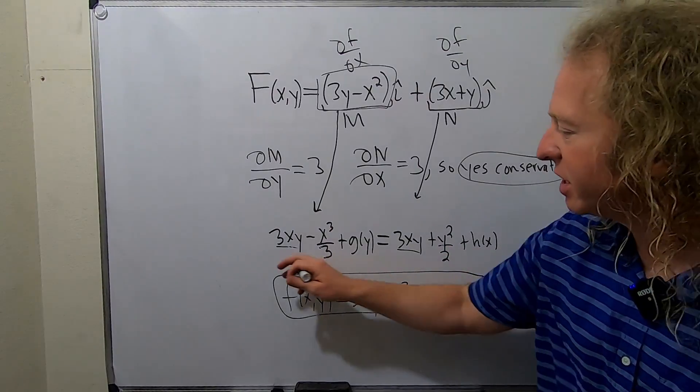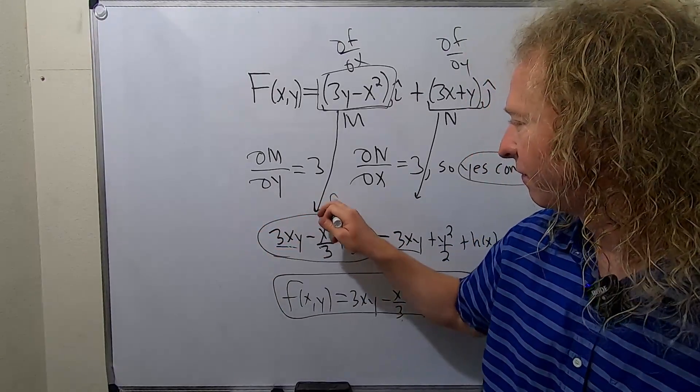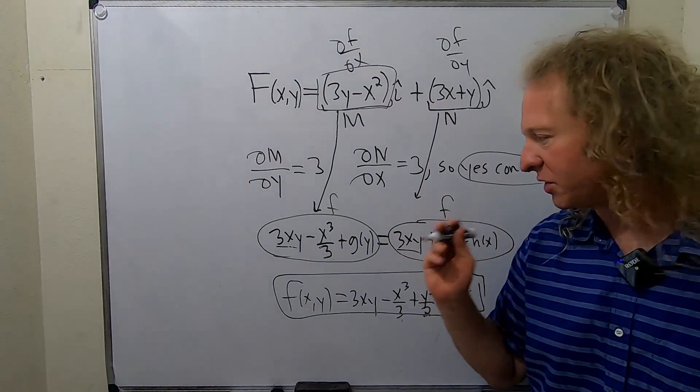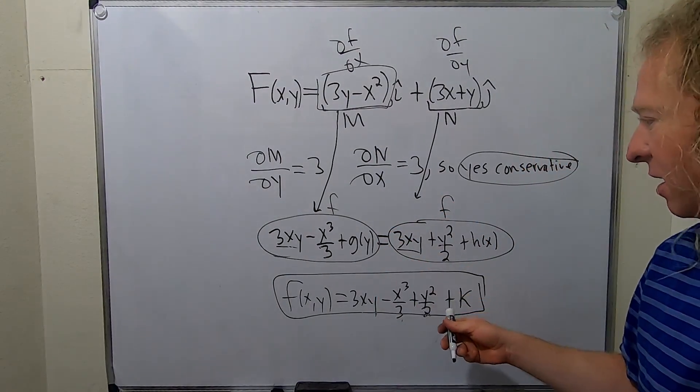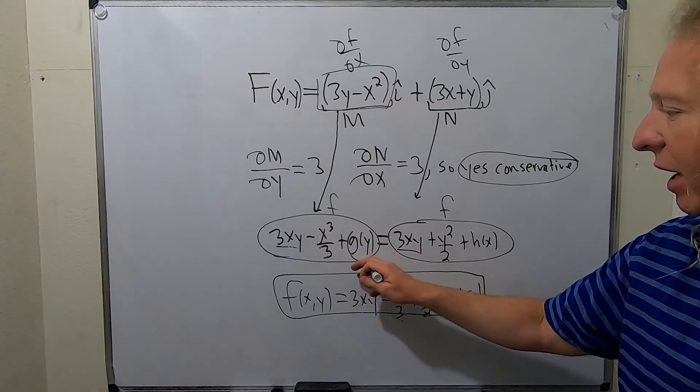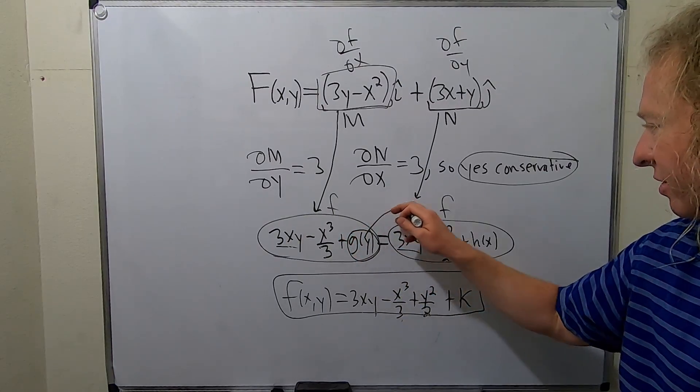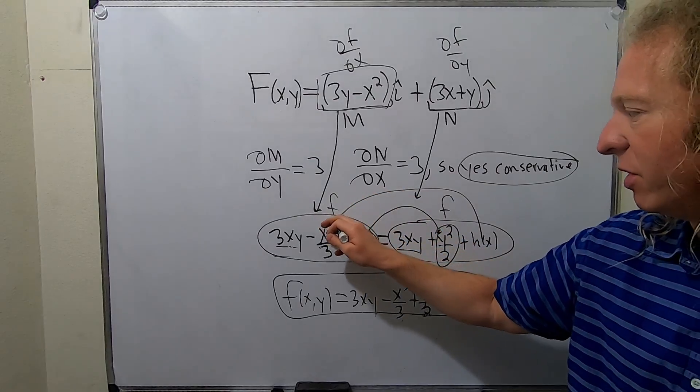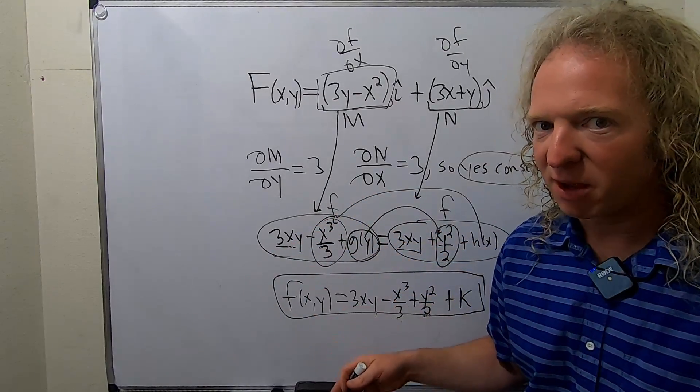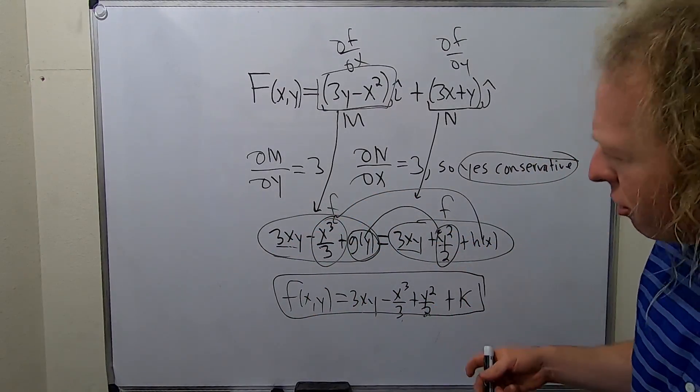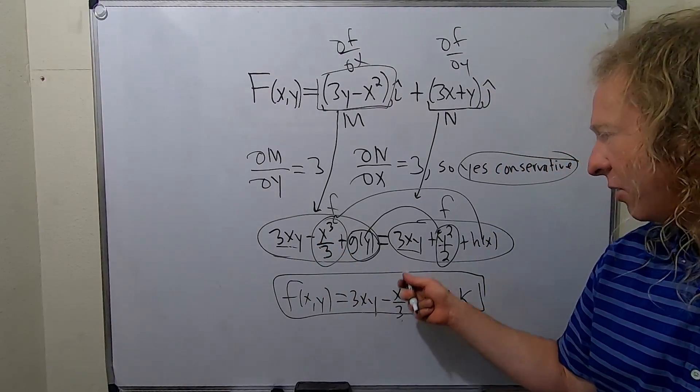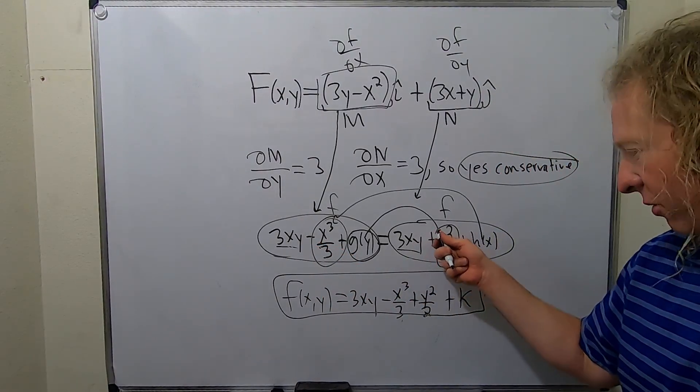And how does that work? Because this is F and this is F, so they're both the same. G(Y) is actually equal to this, and H(X) is actually equal to this, so they must be the same. So do I think about that every time? No, no, no. You just write it down. And then we already wrote it down so don't write it down again.